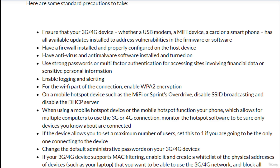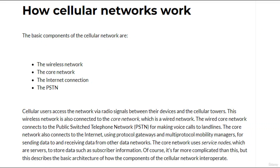How cellular networks work: the basic components of cellular networks are the wireless network, the core network, the internet connection, and the PSTN. Cellular users access the network via radio signals between the devices and the cellular towers. This wireless network is also connected to the core network, which is a wired network.